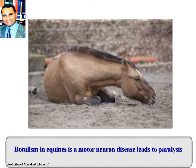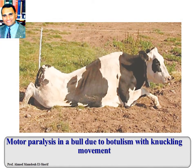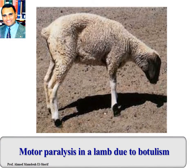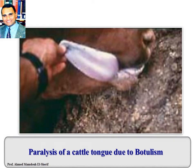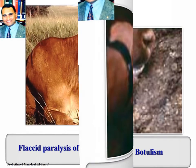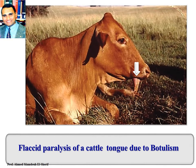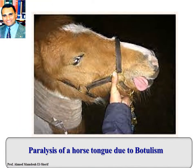Motor neuron disease due to botulism in equines leads to paralysis; the animal takes the typical form, lying on its brisket with the head to one side. Motor paralysis in a foal due to botulism, with the animal knuckling. Motor paralysis in a lamb due to botulism. Flaccid paralysis of a sheep tongue due to botulism. Paralysis of cattle tongue due to botulism. Paralysis of a horse tongue due to botulism.